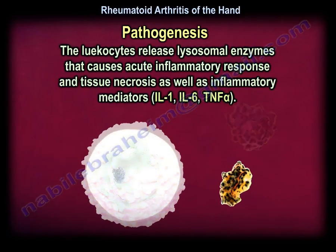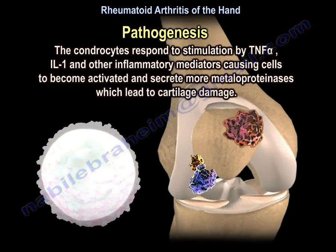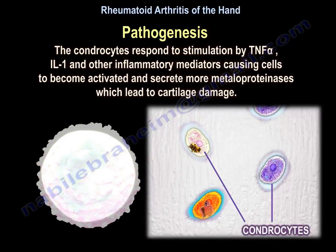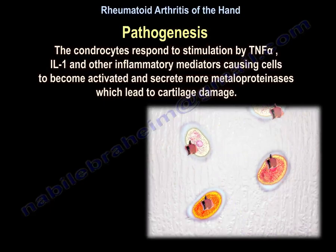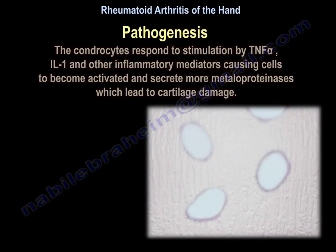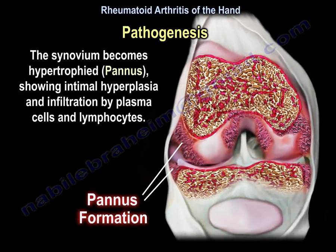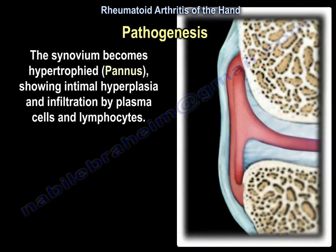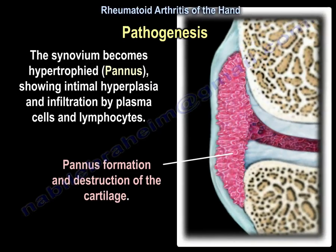The leukocytes release lysosomal enzymes that cause acute inflammatory response, tissue necrosis, and inflammatory mediators including IL-1, IL-6, and TNF-alpha. Chondrocytes respond to stimulation by TNF-alpha, IL-1, and other inflammatory mediators, causing cells to become activated and secrete more metalloproteinases, which lead to cartilage damage. The synovium becomes hypertrophied pannus, showing intimal hyperplasia and infiltration by plasma cells and lymphocytes. Here you can see the pannus formation and the destruction of the cartilage.